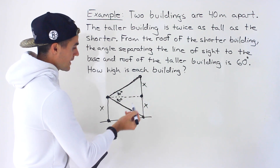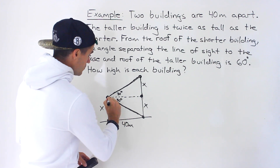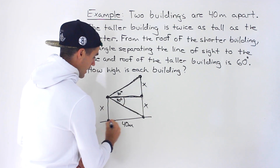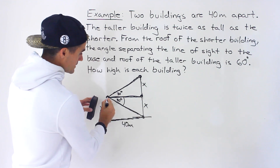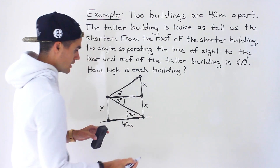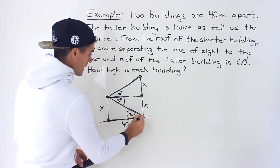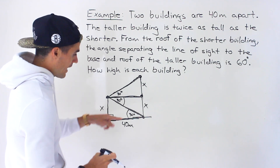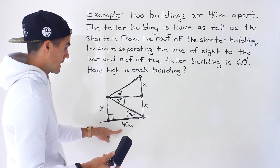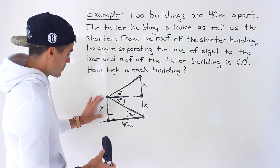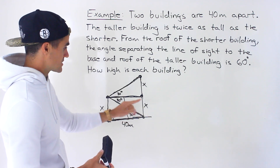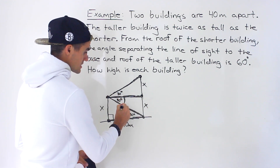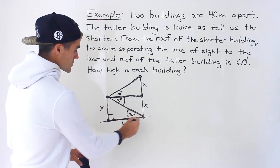This large triangle is isosceles, so the two equal sides are equal. Since this angle is 30 degrees and this line and the ground are parallel, by the Z-pattern (alternate interior angles), the angle at the base of the right triangle is also 30 degrees. Now we have a right triangle with a 30-degree angle and the adjacent side of 40 meters.